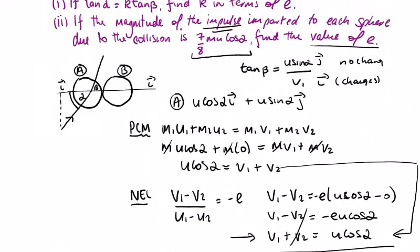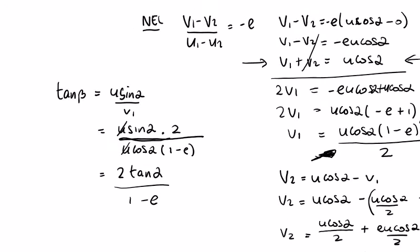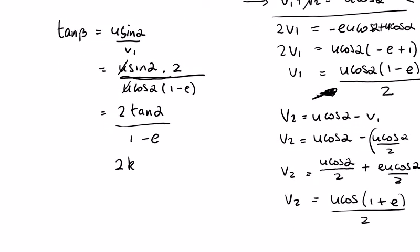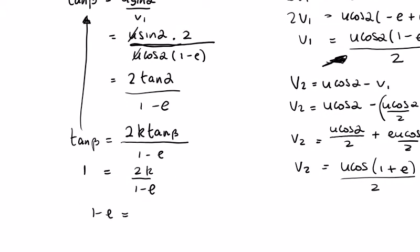We're told tan alpha equals k tan beta, and we're looking for k in terms of e. So tan alpha is k tan beta, so we get 2k tan beta over 1 minus e equals tan beta. Dividing by tan beta, we get 1 equals 2k over 1 minus e. So 1 minus e equals 2k. So k equals 1 minus e over 2, and that's k in terms of e.